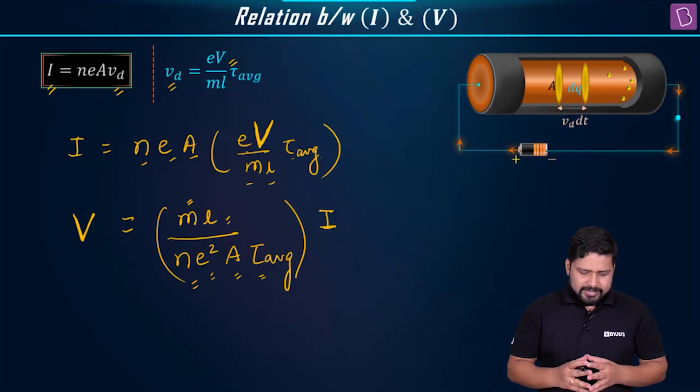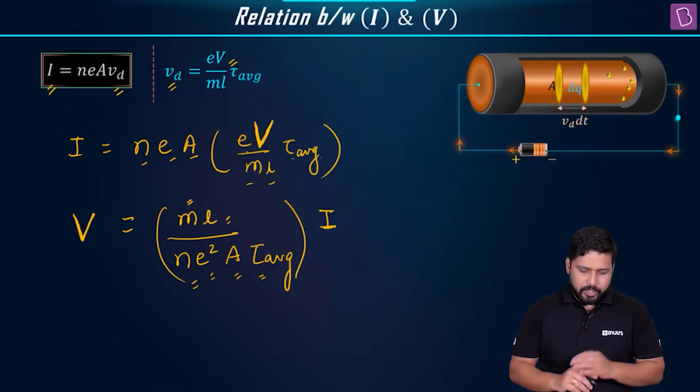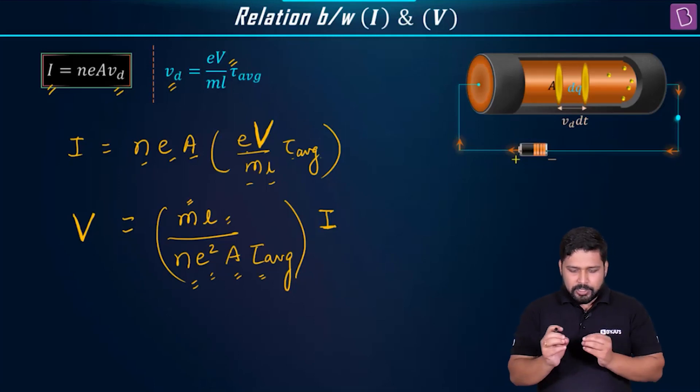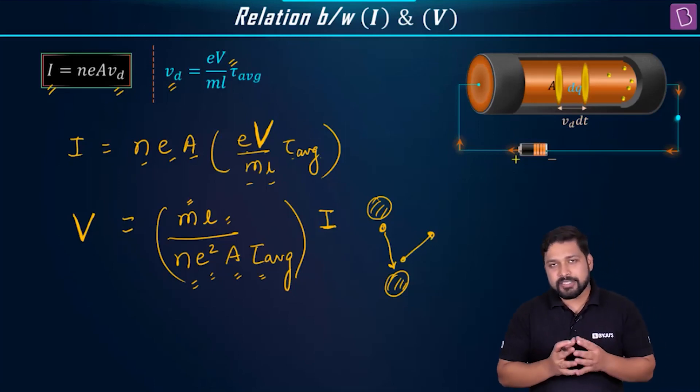If you think about it, considering all these are constant, tau average will depend upon a factor, but we will see that later on. Because the average relaxation time, relaxation time is the time taken between two successive collisions. So this is the time it takes. The time taken between two successive collisions.